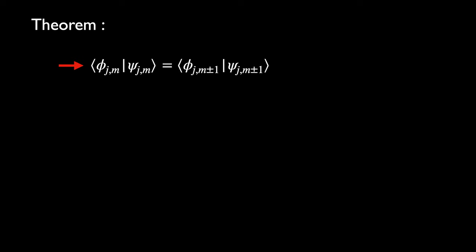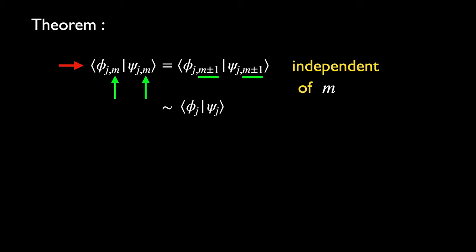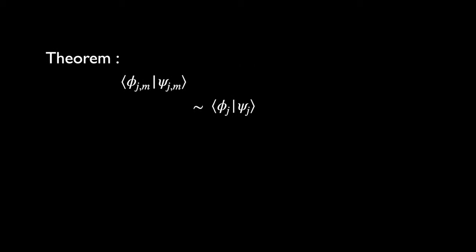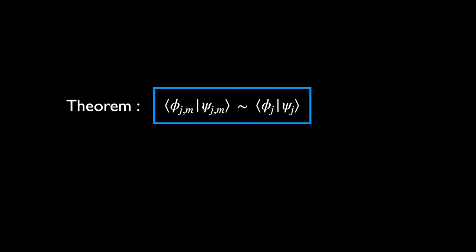This says that the inner product between any two states phi and psi with the same quantum number J is independent of the value of m. We may express this independence by hiding the quantum number m. If you liked this video, consider giving it a like and subscribe to this channel to get notified whenever a new video is ready. See you next time and thanks for watching.